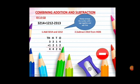Now see the third number. Third number is with minus sign. So we are going to minus 2313 from 4426. Now we will get the answer 2113. This is our final answer.